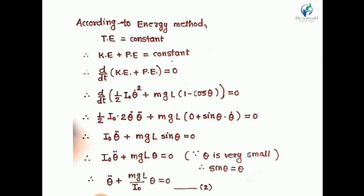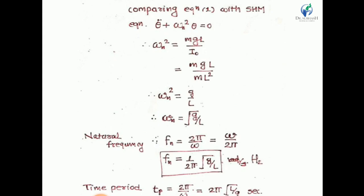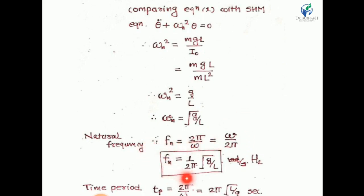Rearranging: θ̈ + (mgL/IO)·θ = 0. Comparing with the standard simple harmonic motion equation θ̈ + ωn²·θ = 0, we obtain ωn² = mgL/IO. Substituting IO = ML², ML cancels, giving ωn = √(g/L). The natural frequency is fn = ωn/(2π) = 1/(2π)·√(g/L) in Hertz. The time period is T = 2π/ωn = 2π·√(L/g).